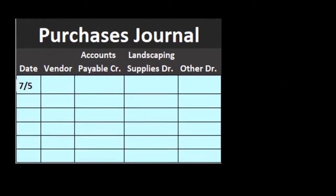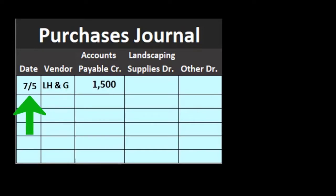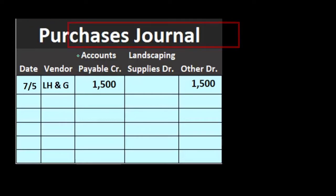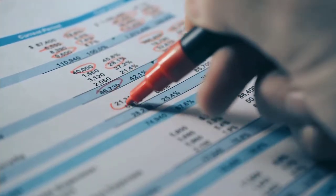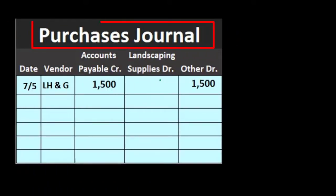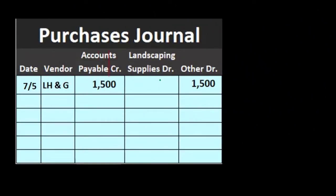Our first transaction is for vendor LH&G on 7/5 — a purchase of $1,500. The other side goes to the 'other' column because it's not going to our normal account, such as landscaping supplies. Since we're using the purchases journal, it will always credit accounts payable. We make a list of accounts we'll be debiting most often, which works best when there are only one or two frequently used accounts like landscaping supplies.